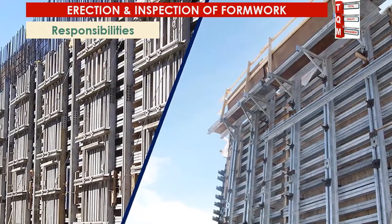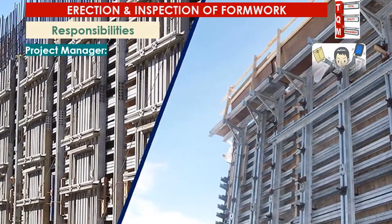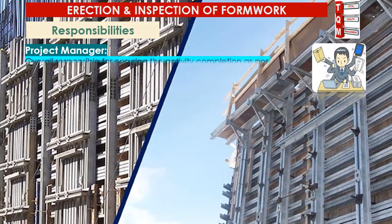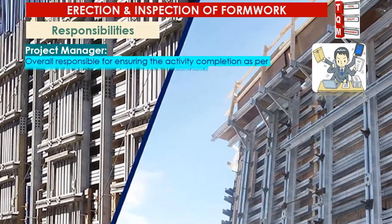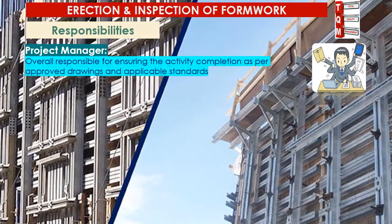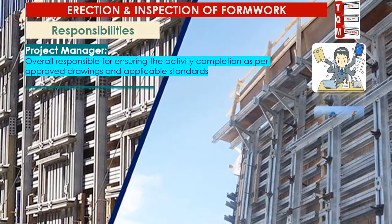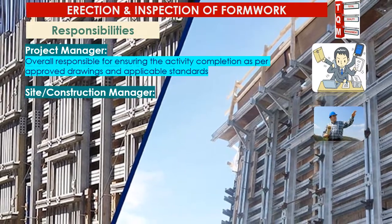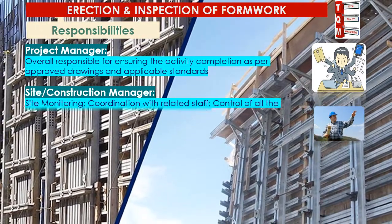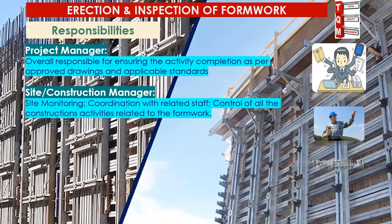Responsibilities of the project team include the following. The project manager is overall responsible for ensuring activity completion as per approved drawings and applicable standards. The site or construction manager is responsible for site monitoring, coordination with related staff, and control of all construction activities related to the formwork.